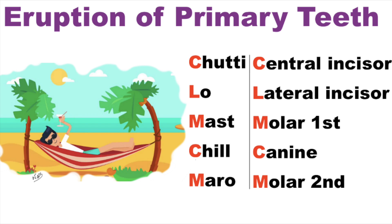Hey guys, welcome back. Today I'm going to tell you a mnemonic and some tips to remember primary teeth eruption sequence. This is the first mnemonic to remember the generalized sequence of primary teeth eruption, and the mnemonic is 'Chhutti lo mast chill maro.'